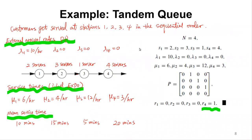Now let's look at an example: the tandem queue. Customers get served at stations one, two, three, four in sequential order. The external arrival rate is Poisson with lambda one equals 10; stations two, three, and four have no external arrivals. Station one has S1 equals two servers, S2 equals two, S3 equals one, S4 equals four, with N equals four stations total.